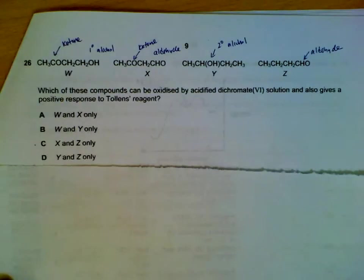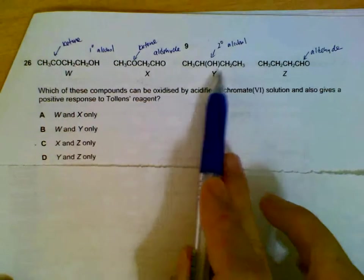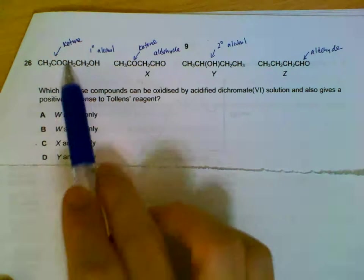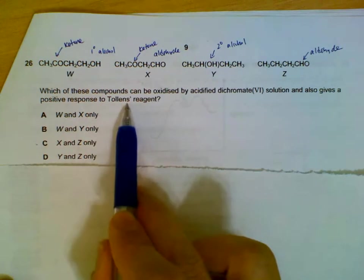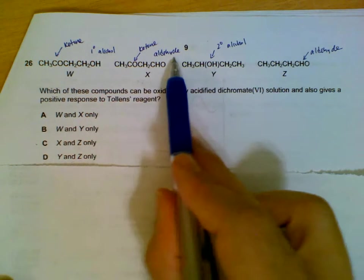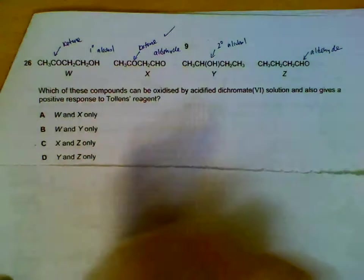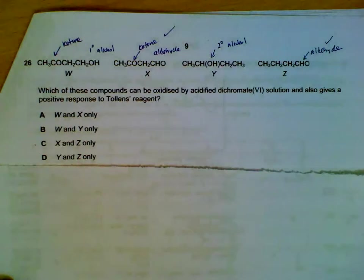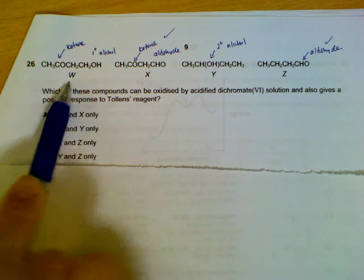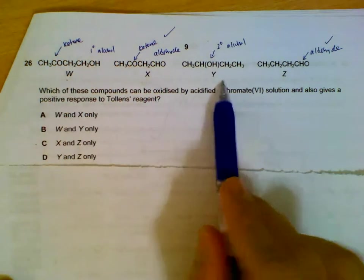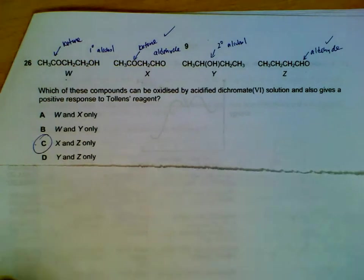Question 26: which one can be oxidized by dichromate and also reacts with Tollen's reagent? I listed out the groups or the functional groups for W, X, Y, Z: ketone and alcohol and all that. The one that will be oxidized and also reacts with Tollen's reagent will be X. We have an aldehyde that can be oxidized and also reacts with Tollen's reagent, and Z. We have an aldehyde group that can be oxidized and reacts with Tollen's reagent. For W, it can be oxidized but won't react with Tollen's reagent. For Y, it can be oxidized and not react with Tollen's reagent. So X and Z only.